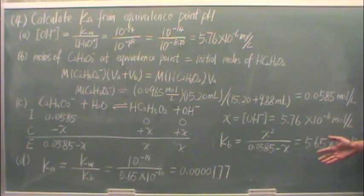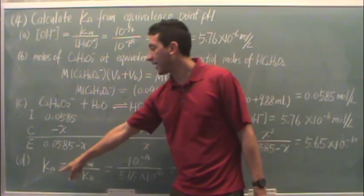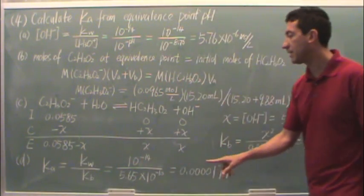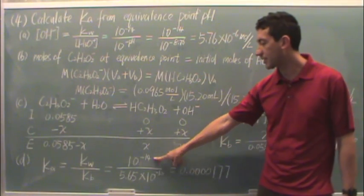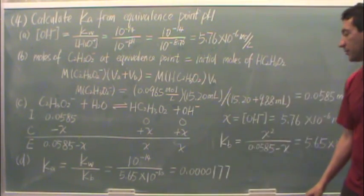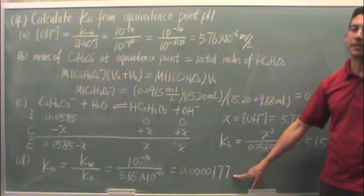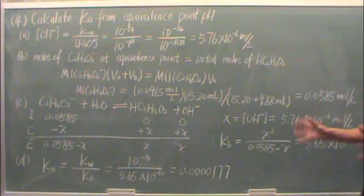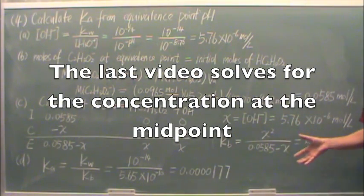That's not what we wanted exactly, we want Ka. Ka is Kw over Kb. We know Kw, that's a constant, and we know Kb. So you're going to get a number around 10 to the minus 5 for Ka at the equivalence point.